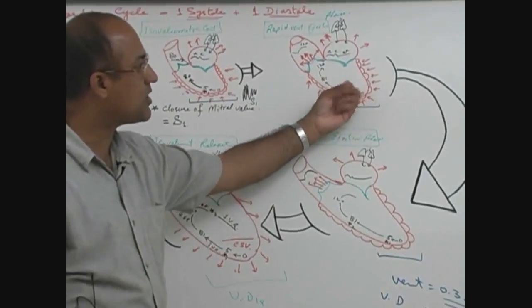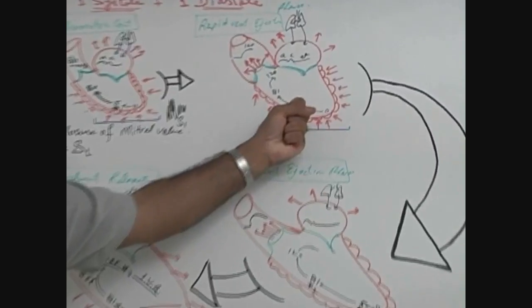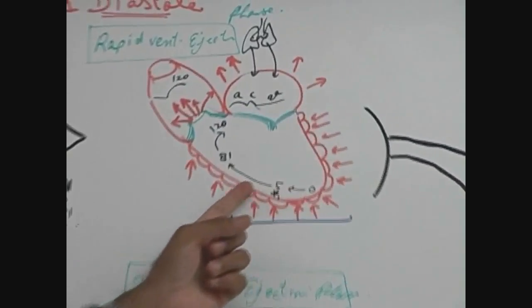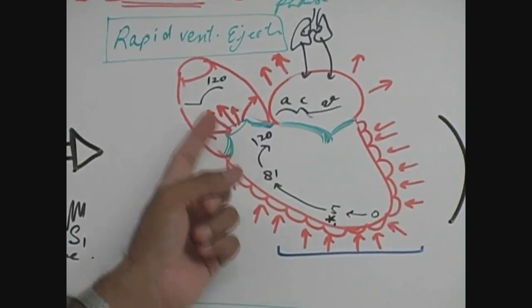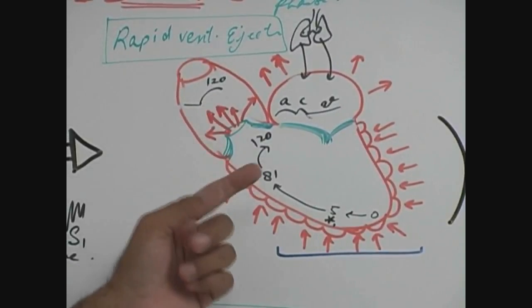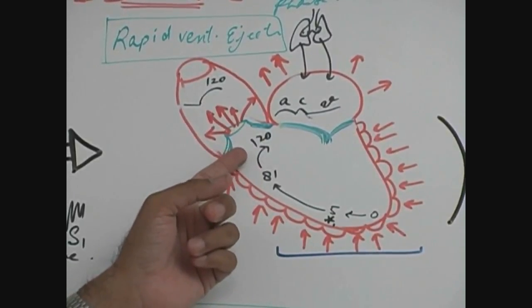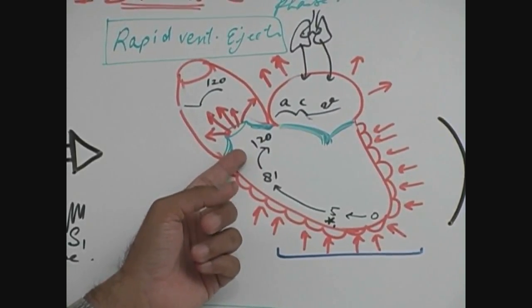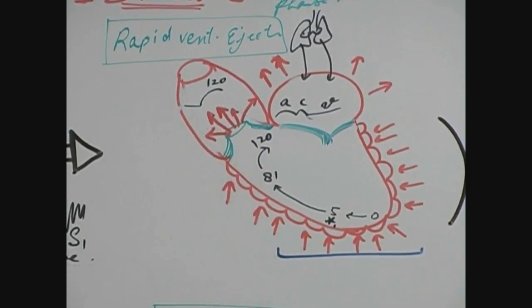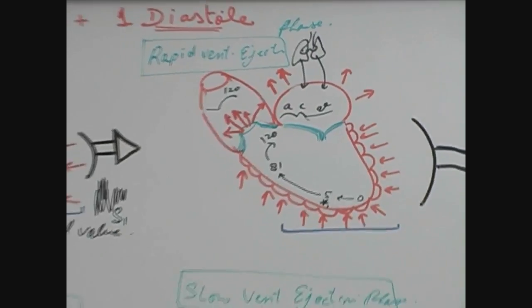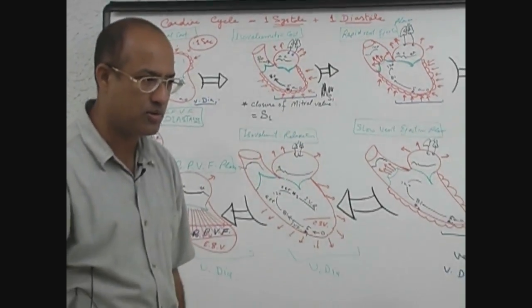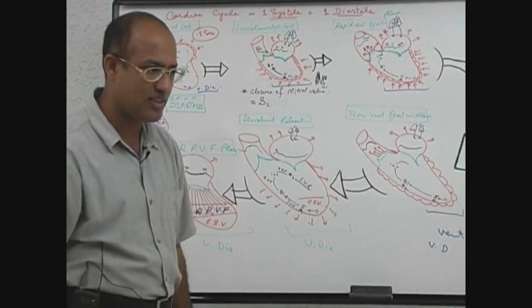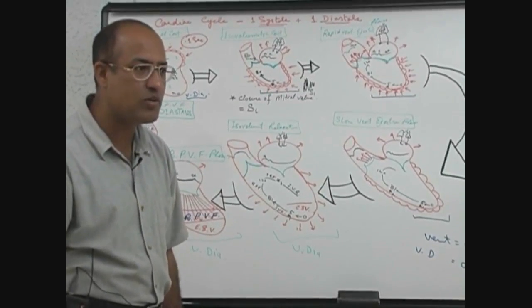In the next phase, when the ventricle contracts and the pressure in the ventricle becomes greater than aortic pressure, the aortic valve opens. Does the opening of the aortic valve produce any sound?